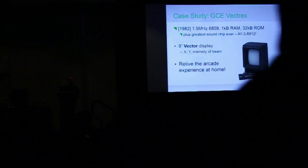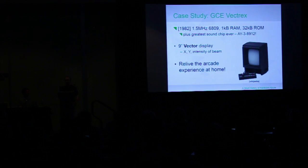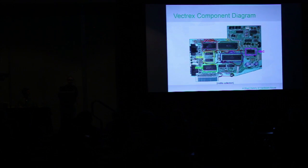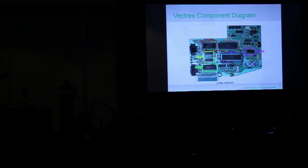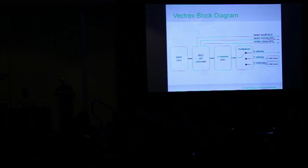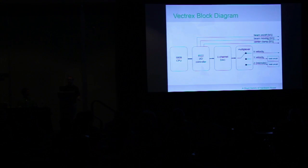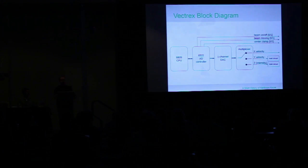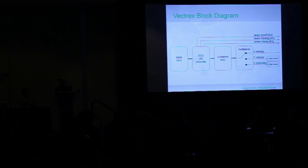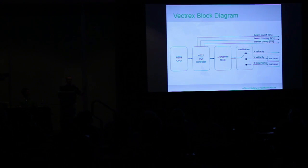You controlled where the beam was in X, Y, and how bright it was. The whole point was that you could relive the arcade experience at home. Internally, the thing is ridiculously simple: it has a CPU, a tiny little IO processor — the 6522 — the best sound chip in the world, a little bit of RAM, a little bit of ROM, and one single channel DAC. That's it. It actually multiplexed a bunch of things. The software programmer controlled: beam on or off, beam speed, beam smashed to center, horizontal speed, vertical speed, and brightness.